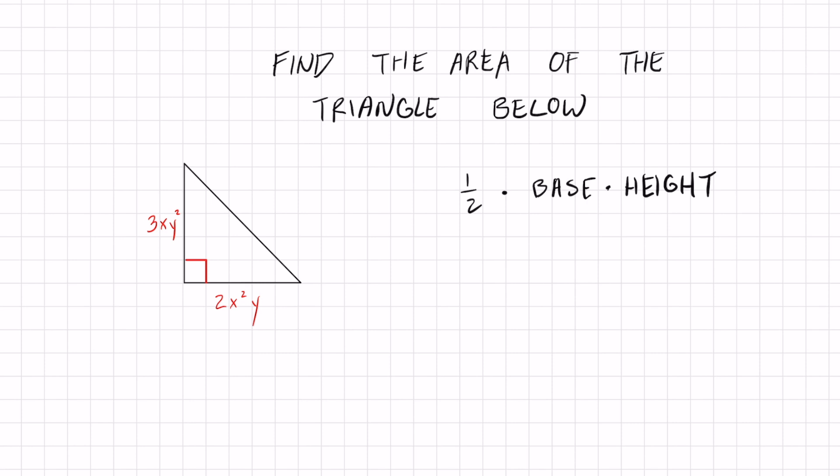The base of this triangle is 2x squared y and let's just put that right below 2x squared y and we're going to multiply it to the height. The height given that dimension is 3xy squared. Don't forget that half is still in the front.